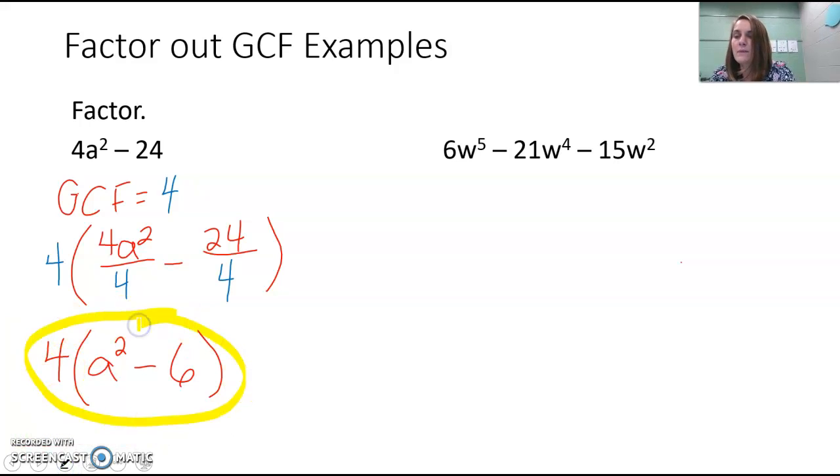And then let's look at the second one. Do the same technique. We're going to factor by the greatest common factor. So 6w to the 5th minus 21w to the 4th minus 15w squared. Well, 6, 21, and 15. 6 is our smallest number.